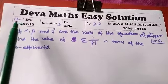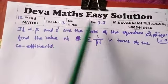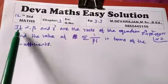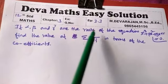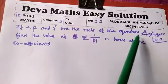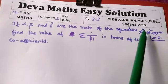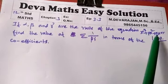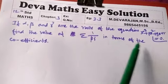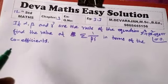Hi everyone, this is Deva. Now we are going to see Tolson Bank Chapter 3, Example 3.3. If alpha, beta, and gamma are the roots of the polynomial x^3 + px^2 + qx + r = 0, find the value of summation 1/(beta*gamma) in terms of the coefficients.